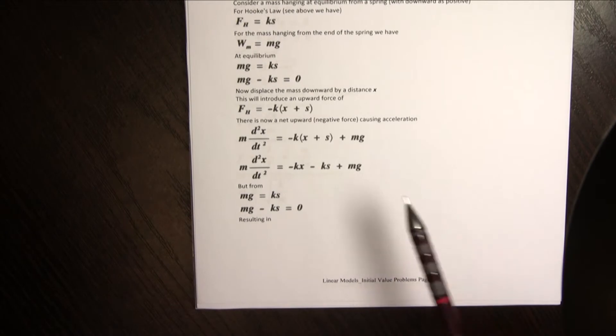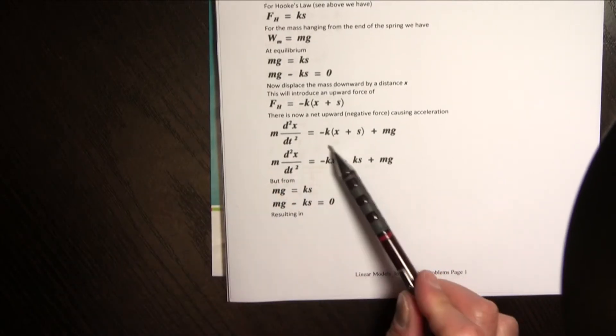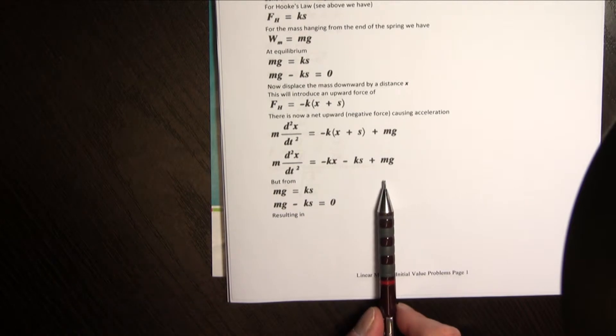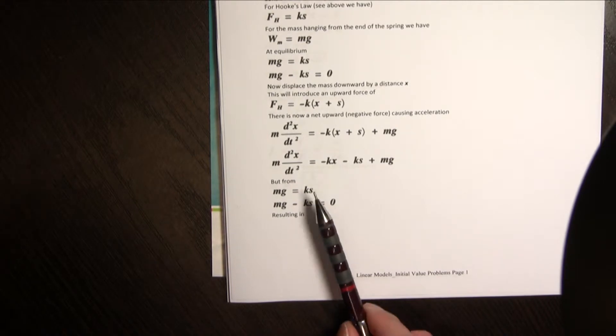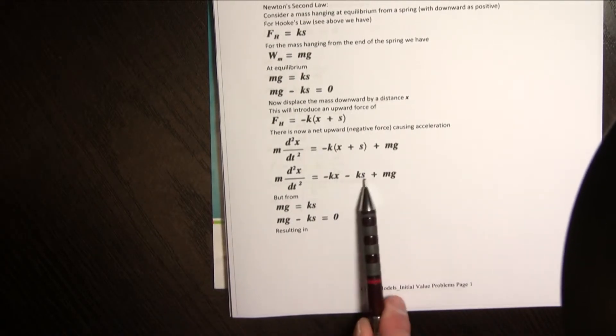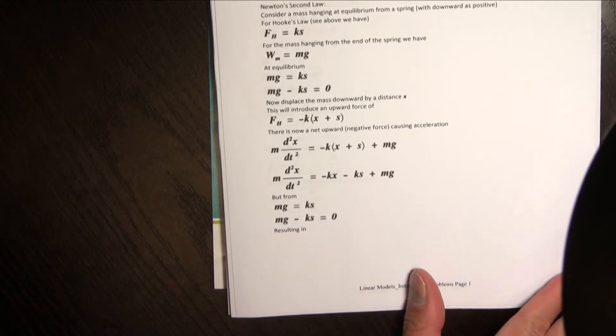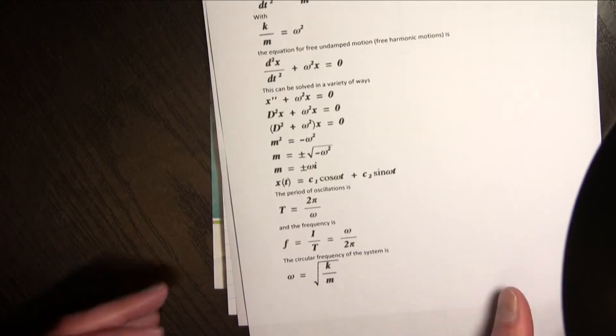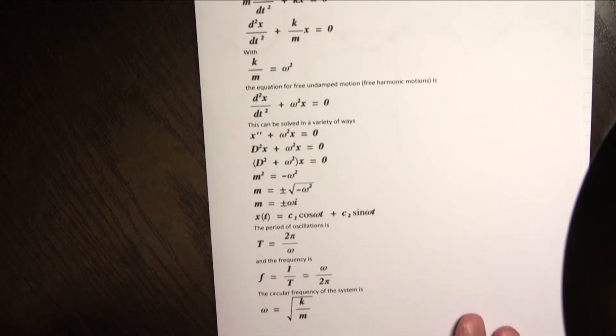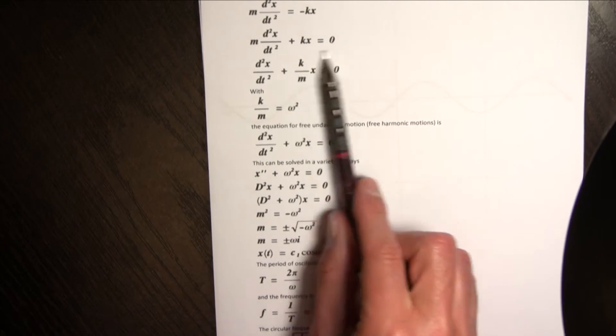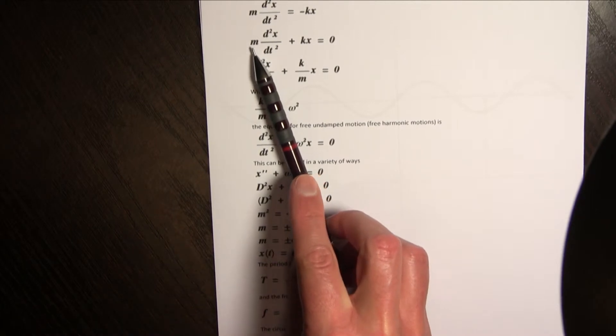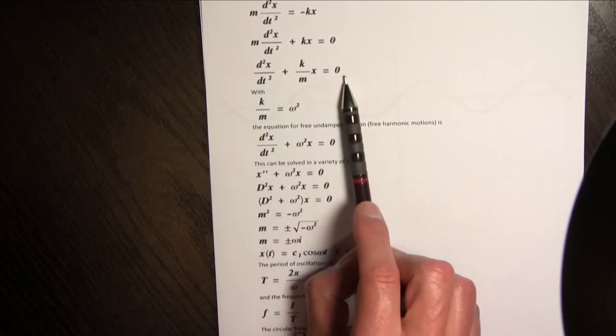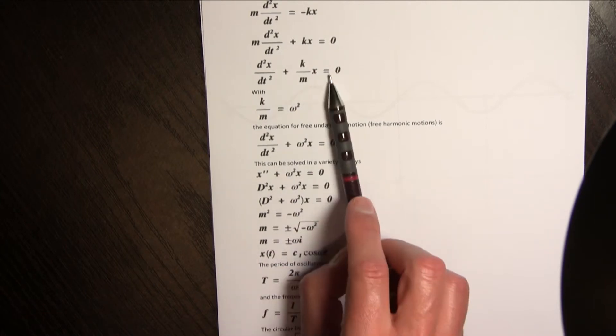And just a very simple algebra so I've just expanded there but I do remember something, I know that mg equals ks or mg minus ks is zero, so this mg minus ks that goes to zero. Well that is zero so we're left with mx double prime equals negative kx. Well I can bring that to the other side and I've got this homogeneous equation.